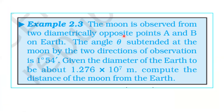The moon is observed from two diametrically opposite points A and B on Earth. The angle theta subtended at the moon by the two directions of observation is 1 degree 54 minutes. Given the diameter of the Earth to be about 1.276×10⁷ meters, compute the distance of the moon from the Earth.